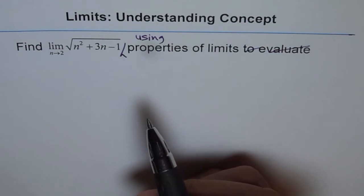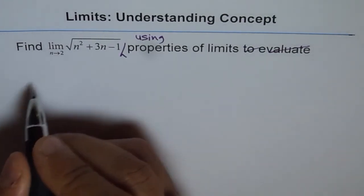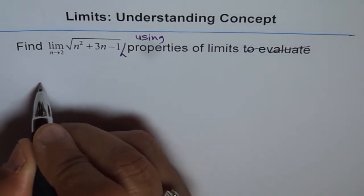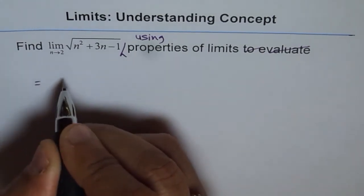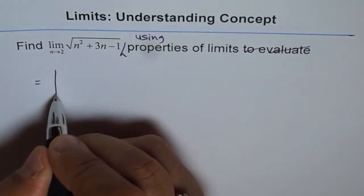So all these properties work for limits as well. Using properties, we can write this as a limit. See carefully how we write this. The limit of this function can be written as square root of